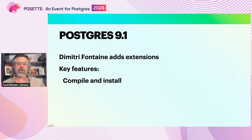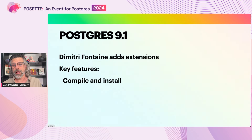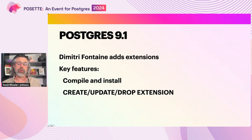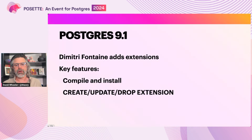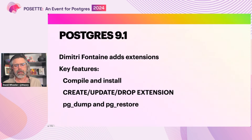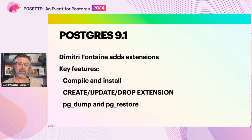The three key features were: tooling to compile and install extensions, both DSOs and pure SQL; new SQL commands to create, update, and drop extensions, which bundle together objects into named units; and backup and restore support to ensure consistent versioning and behavior when upgrading Postgres itself.